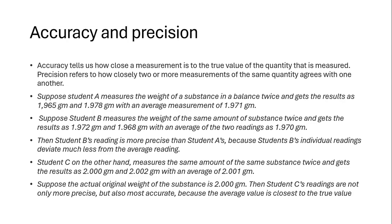Student B's reading is more precise than student A's because student B's individual readings deviate much less from the average reading. One reading is 1.972, the other is 1.968, with an average of 1.970 gram. Student B's reading is more precise because the two readings are very close to the average reading.